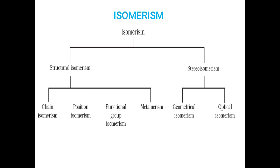What do you mean by isomerism? Isomerism is the property of an organic molecule which shows the same chemical formula but different physical structure. Same chemical formula, different physical structure.